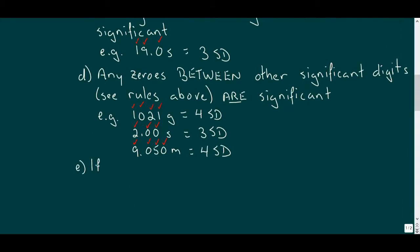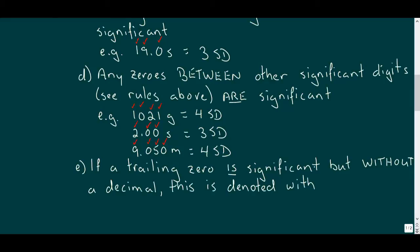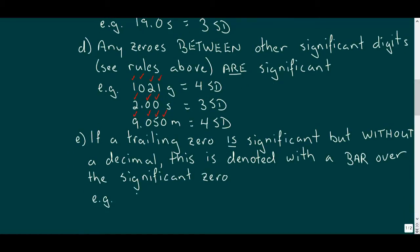If a measurement is precise enough that we can be certain of a trailing zero, but there's no decimal, we denote the significance of the most precise significant zero with an overscore, a bar on top. Any zeros before this digit become significant due to rule D above. So let's reconsider our 1,200 kilogram mass. If we know the precision to tens of kilograms, we denote this certainty with a bar above the first zero for three sig figs.